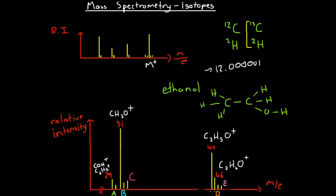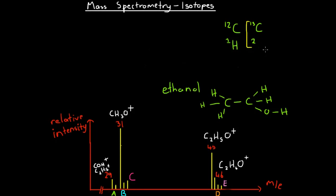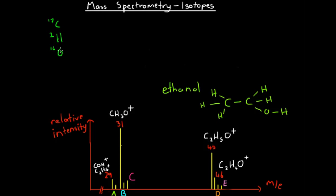This time we've got an extra five peaks — peaks A, B, C, D, and E. We're going to go through all the different isotopic combinations that could have caused these peaks that deviate slightly from the main ones at ratios of 29, 31, 45, and 46. We're usually dealing with carbon-12, hydrogen-1, and oxygen-16, and we assumed our fragments were made up of these three isotopes. Now peaks A to E have been caused due to varying isotopes: carbon-13 instead of carbon-12, hydrogen-2 instead of hydrogen-1, and oxygen-18 instead of oxygen-16.